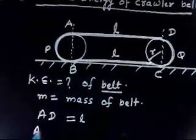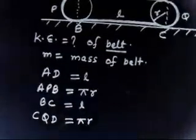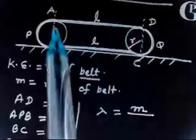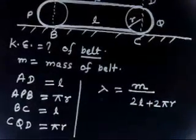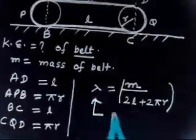Part APB is a semicircle of length πr, part BC has length l, and part CQD also has length πr. The total length is 2l + 2πr. So lambda, the mass per unit length, is m divided by (2l + 2πr).